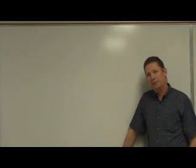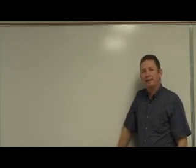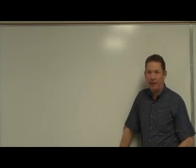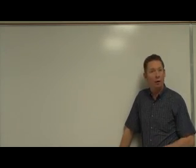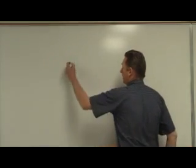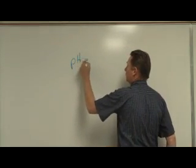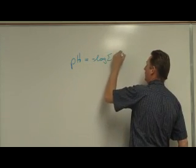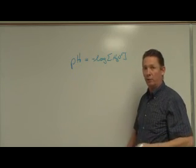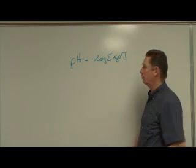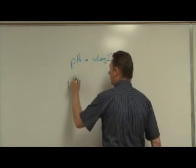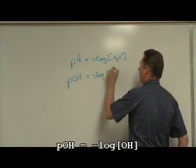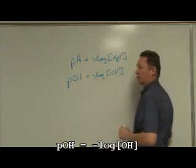Once you understand the idea of pH, we take you into a little different direction — the pKW or the pOH. You remember that pH is equal to the negative log of the H₃O⁺ ion concentration. So can we do the same thing with the hydroxide ion concentration? Could we calculate the pOH? The answer to that is: pOH is the negative log of the OH⁻ ion concentration.